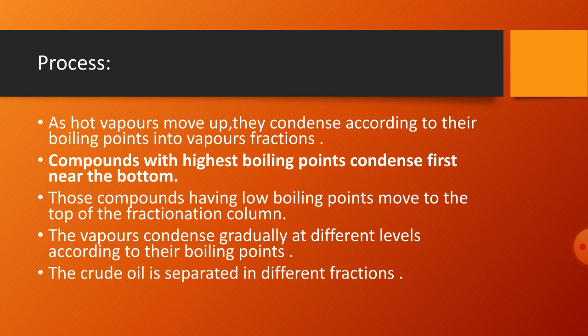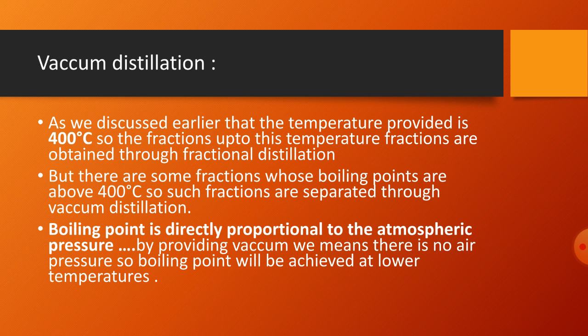Compounds with low boiling points move to the top of the fractionating column. The vapors condense gradually at different levels according to their boiling points, and the crude oil is separated into different fractions by fractional distillation. Some substances in the mixture have boiling points above 400 degrees Centigrade, and for their separation a different method is required, called vacuum distillation.